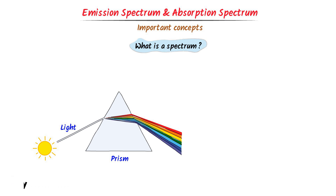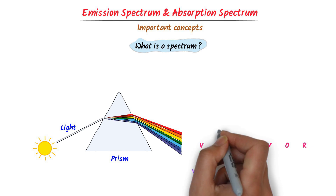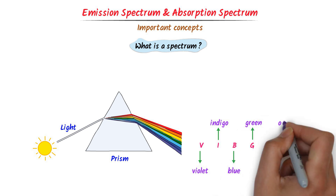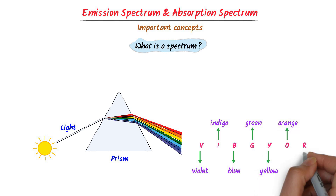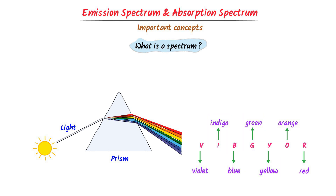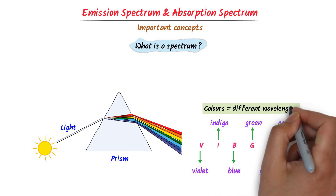These seven colors are VIBGYOR — V stands for violet color, I stands for indigo color, B stands for blue color, G stands for green color, Y stands for yellow color, O stands for orange color, and R stands for red color. Remember that these seven colors have their own wavelengths, so all these colors have different wavelengths.